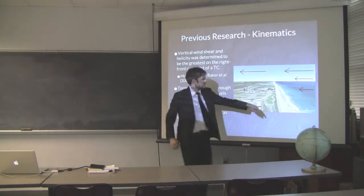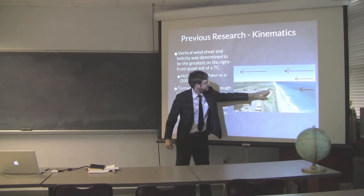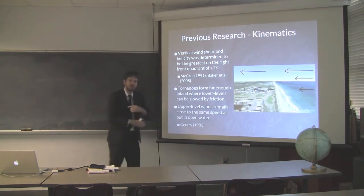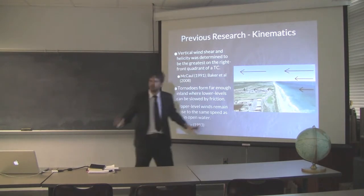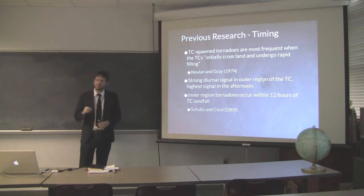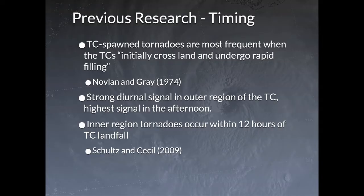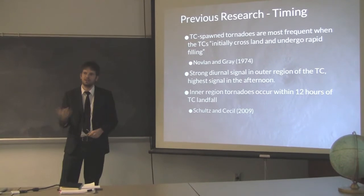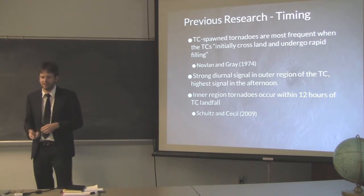Tornadoes form far enough inland where low levels can be slowed by friction. Imagine vectors where a longer line means faster wind — surface winds hit land, get slowed by friction, and have greater horizontal vorticity, while upper winds stay relatively the same. Timing-wise, TC tornadoes are most frequent when TCs initially cross land and undergo rapid filling — when dry air intrudes. There's also a strong diurnal signal in the outer region, with the highest frequency in the afternoon, while the inner region usually occurs within 12 hours of landfall.